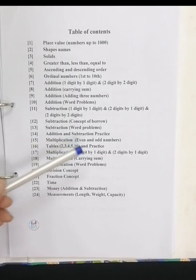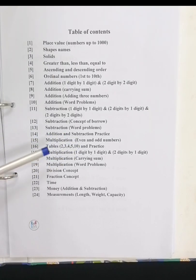Next, addition in four different forms and subtraction also in three different forms, addition and subtraction practice together, and then multiplication tables, multiplication one digit by two digit and two digits by one digit, multiplication in four different ways, division concept, fraction concept, and time, money, measurement.